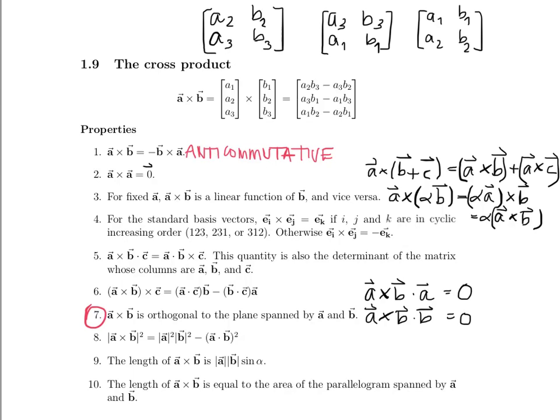Property 8: The magnitude of the cross product squared equals the magnitude of A squared times the magnitude of B squared minus A dotted with B, all squared. This is also something you can prove using brute force. The length of A crossed with B equals the length of A times the length of B times sine alpha, where alpha is the angle between A and B that is less than 180 degrees.